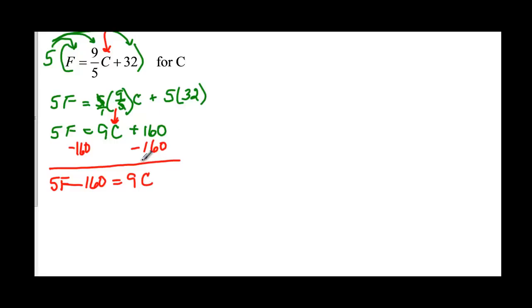And I'm trying to go for C. So I'm going to divide by nine because it's being multiplied by nine. And my final answer is five F minus one sixty over nine is equal to my C.